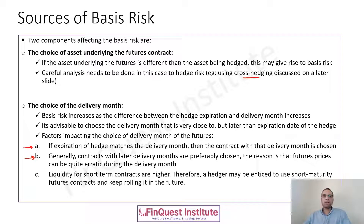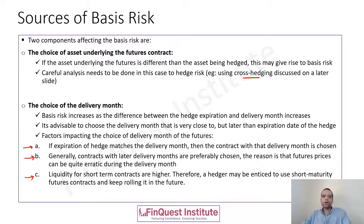That is one reason why we go in for a futures contract with a delivery month later than our expected delivery date. Another consideration is liquidity of futures contracts. Not every futures contract traded on the exchange is liquid. Generally, short maturity futures are far more liquid compared to longer maturity futures. We should always go in for liquid positions because contracts with higher liquidity offer far better price efficiency, which is something every market participant would like to have.